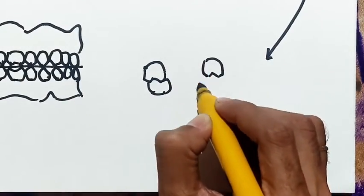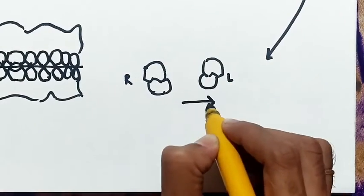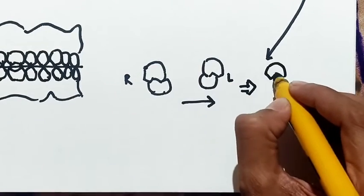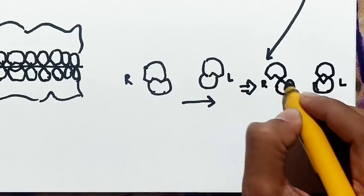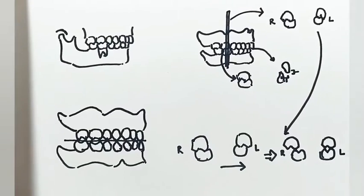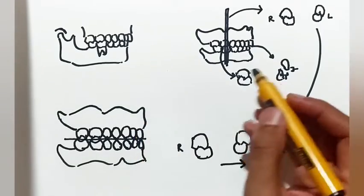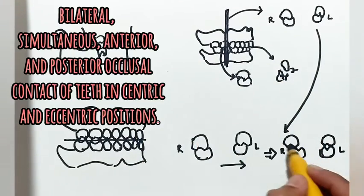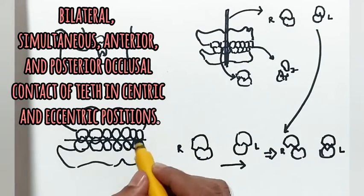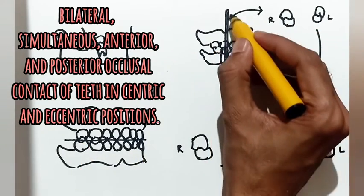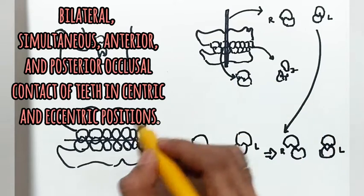Suppose we move our mandible to the left, then in coronal section again all the posterior teeth are in contact making the denture balanced. So the definition itself is the explanation, that is balanced occlusion is bilateral, simultaneous, anterior and posterior occlusal contact of teeth in centric and eccentric positions.